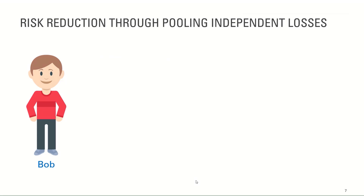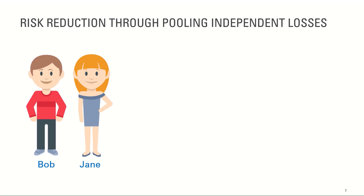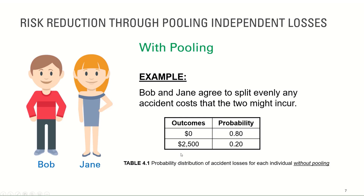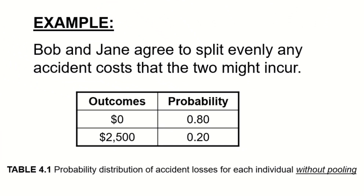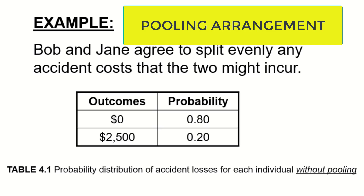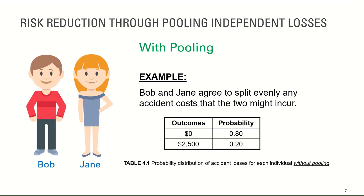Now let's introduce Jane. Assume Bob and Jane have the same probability distribution. We want to examine what happens if Bob and Jane agree to split accident costs evenly — in other words, they agree to share any losses equally. This kind of arrangement is what we call pooling, and because Bob and Jane are pooling resources together, they pay any losses that may arise from potential accidents.